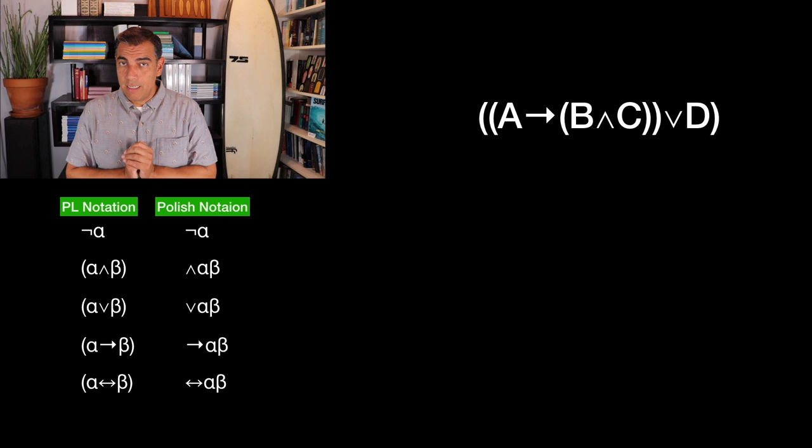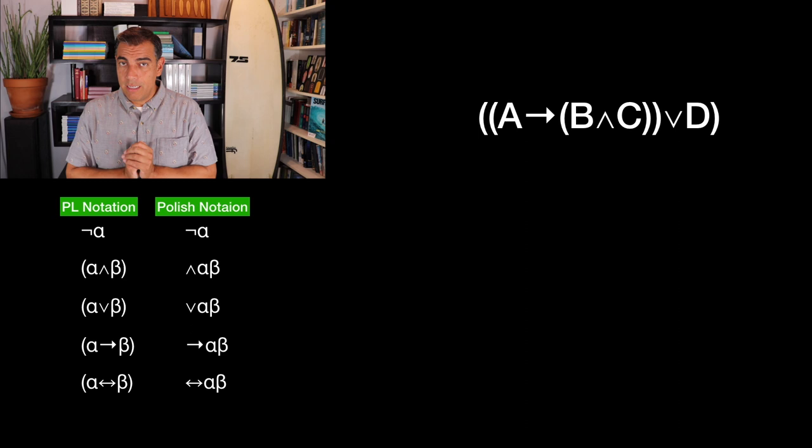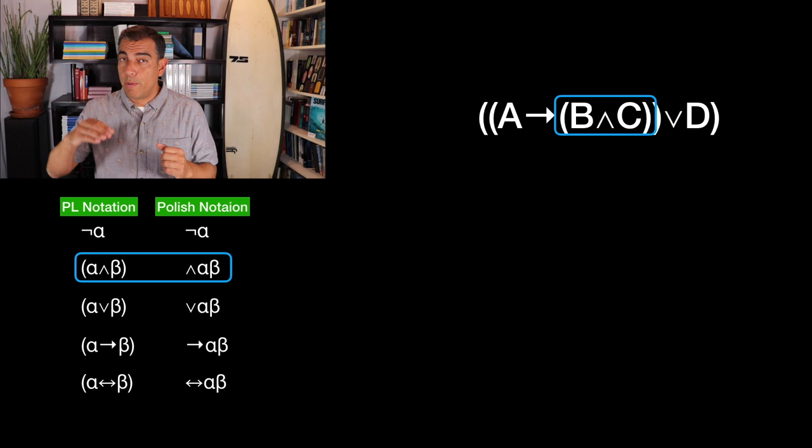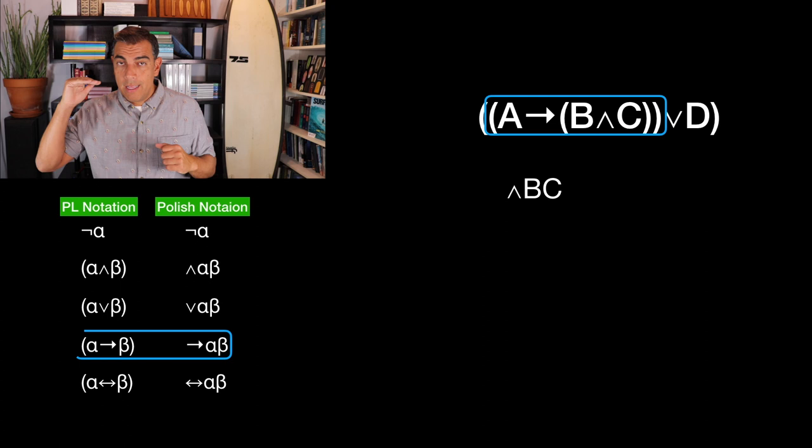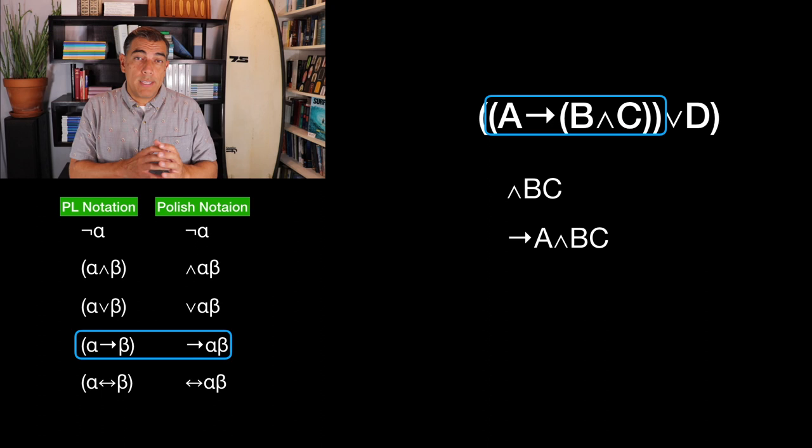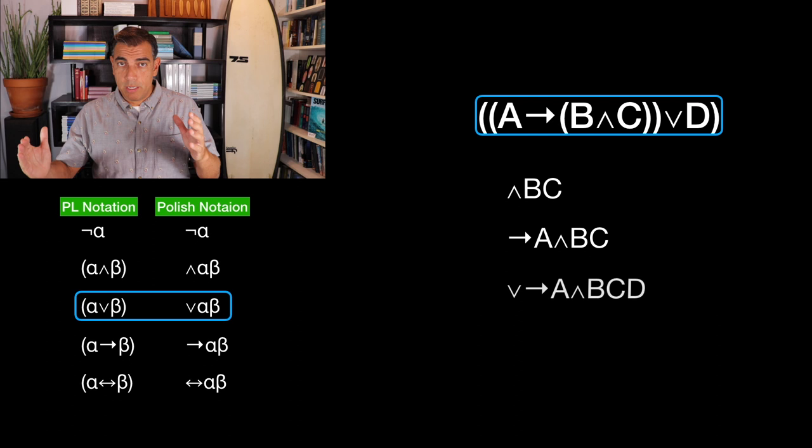Finally, if we wanted to do 'if A then B and C, or D,' first we do that inner conjunction: conjunction sign, B, C. We want to use that as our consequent. So we write arrow, A, and then and B C. Finally, we want to use that whole thing as our first disjunct in our disjunction. So we write the disjunction symbol, then arrow A and B C, then our second disjunct D.